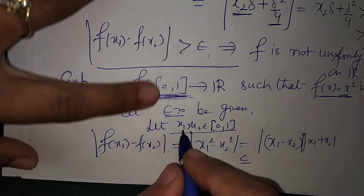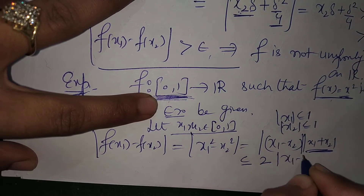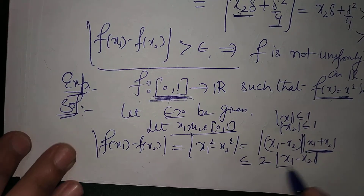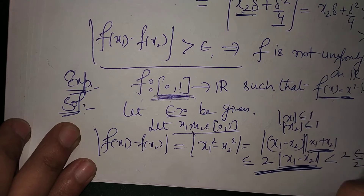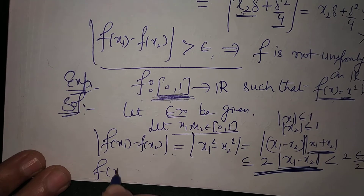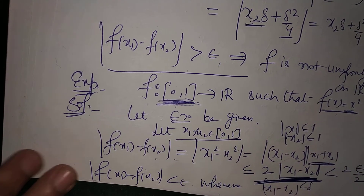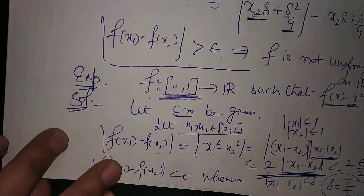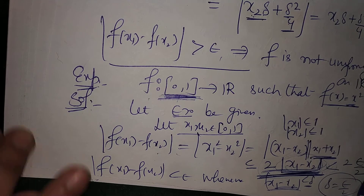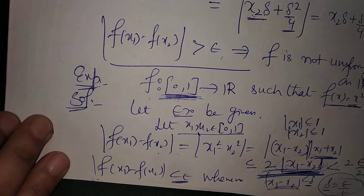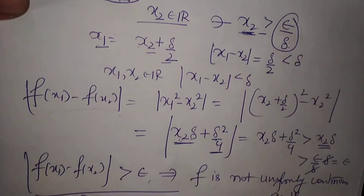Since x1 and x2 are in [0,1], the modulus of each is at most 1, so |x1 + x2| is at most 2. Therefore |f(x1) - f(x2)| ≤ 2·|x1 - x2|. For this to be less than epsilon, we need 2·|x1 - x2| < ε, which holds if |x1 - x2| < ε/2. So we choose delta = ε/2. For every epsilon, we have found a delta for which the definition is satisfied, and therefore f is uniformly continuous on [0,1].